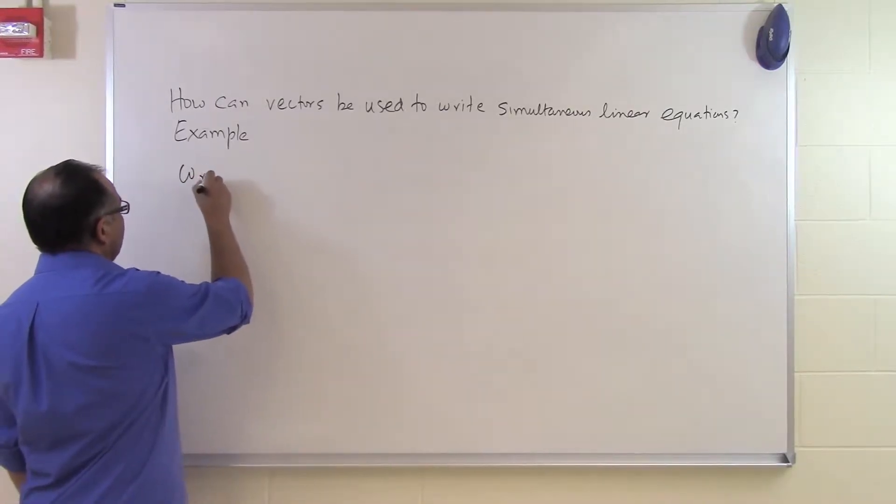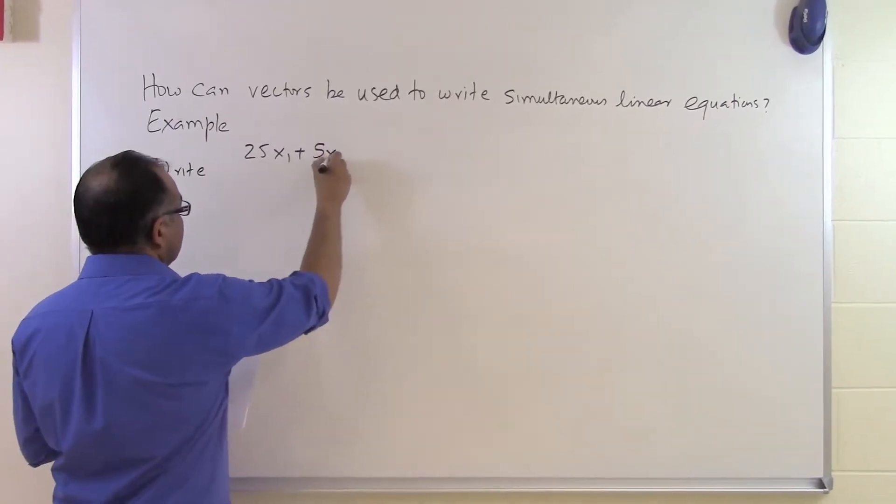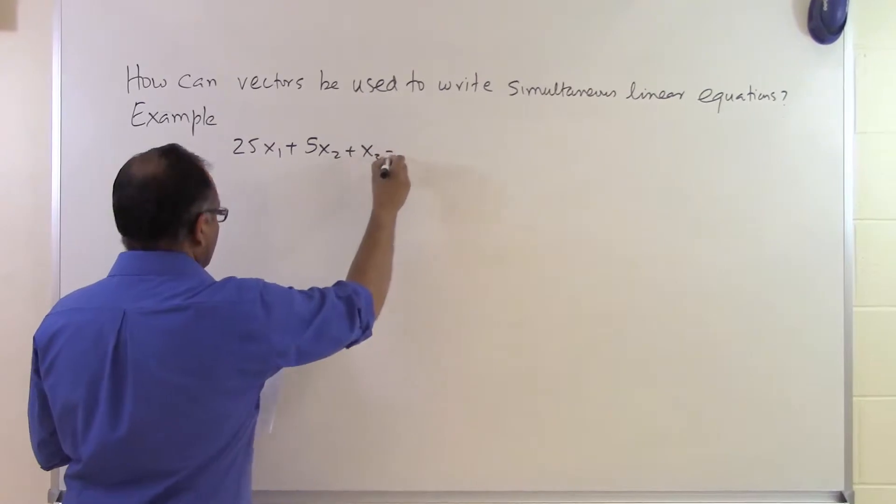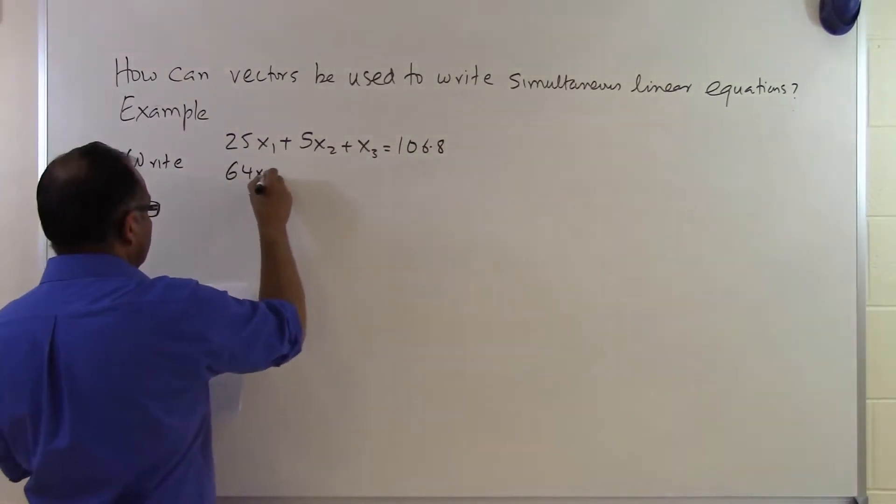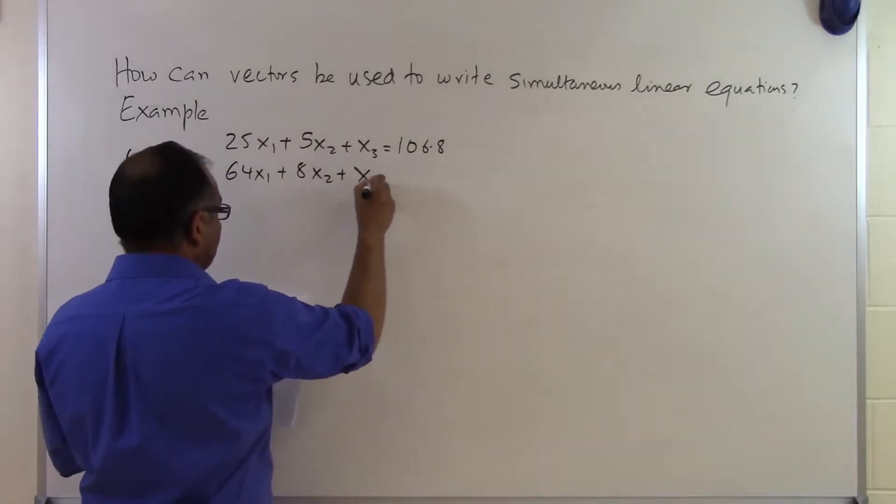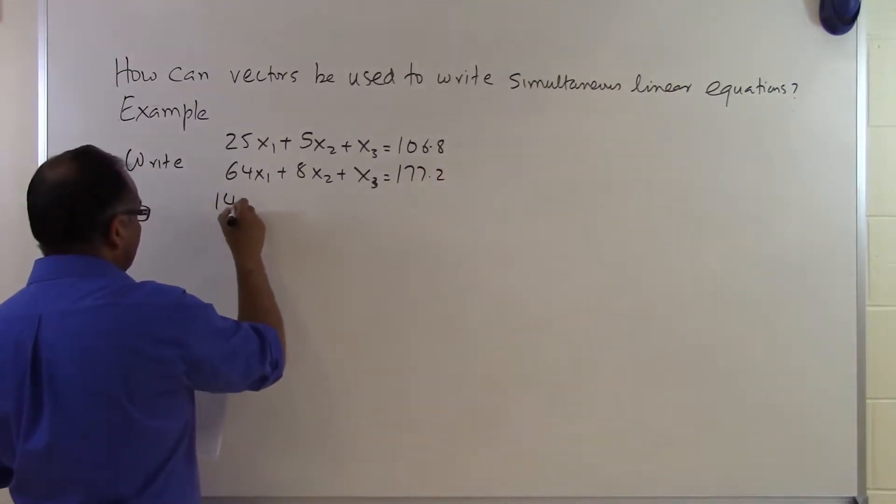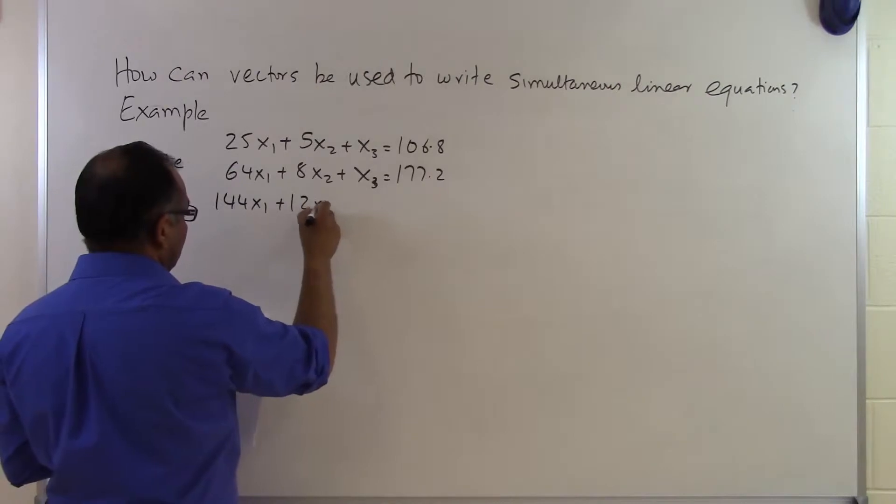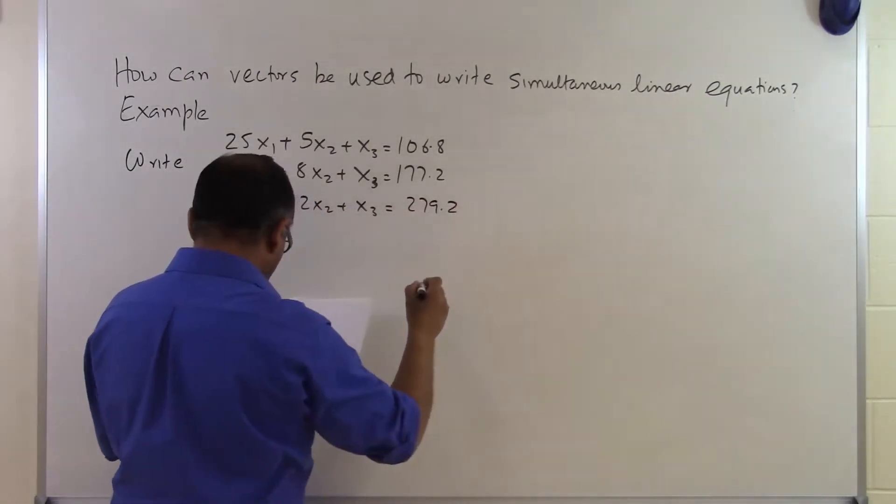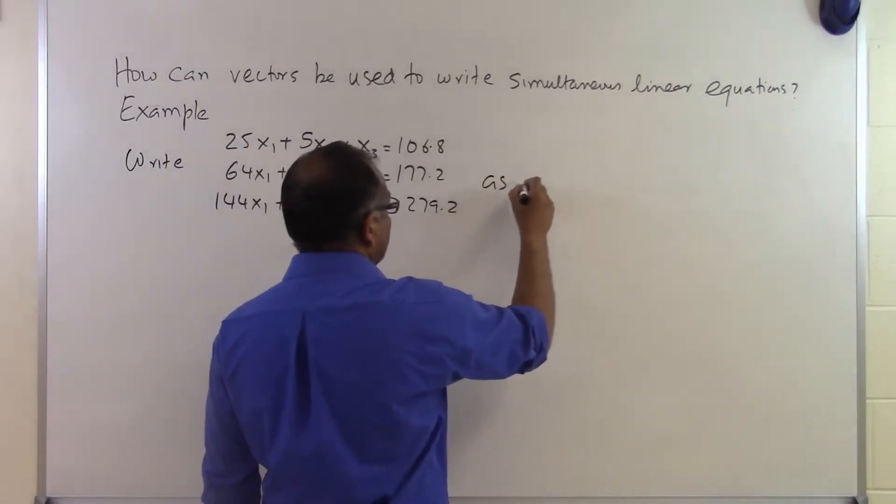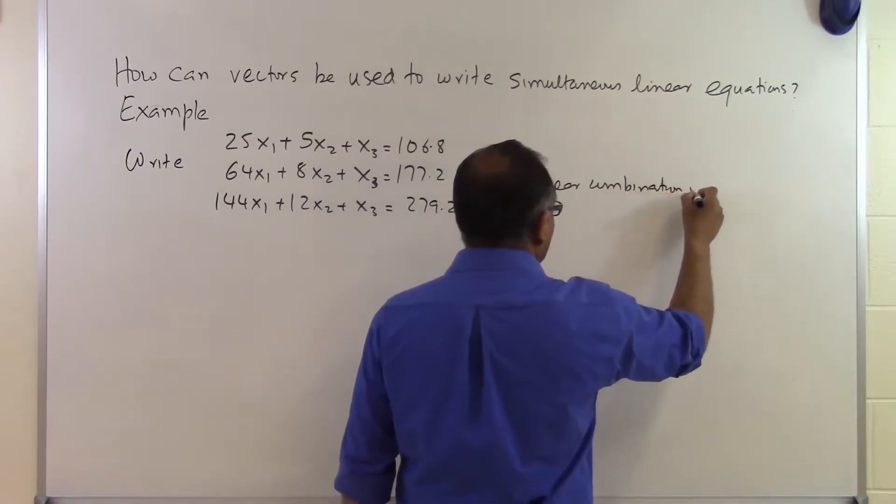Let's suppose somebody says, write the following three equations: 25x1 plus 5x2 plus x3 equals 106.8, 64x1 plus 8x2 plus x3 equals 177.2, and 144x1 plus 12x2 plus x3 equals 279.2 as a linear combination of vectors.